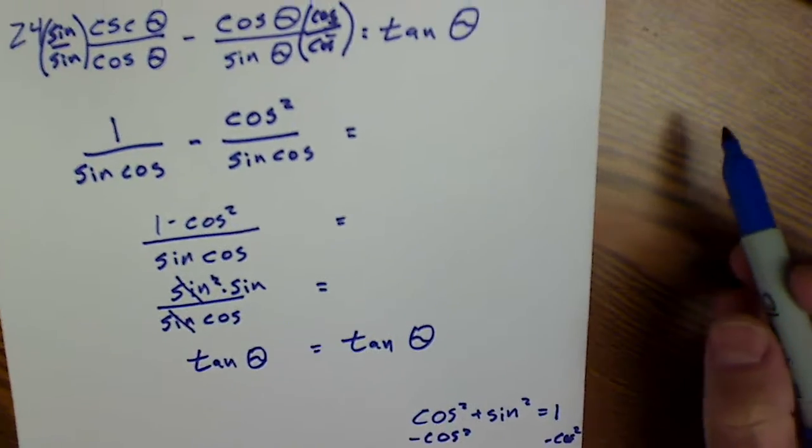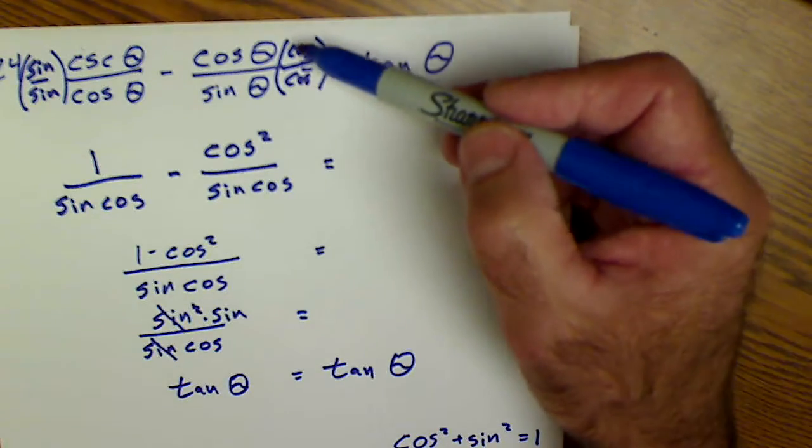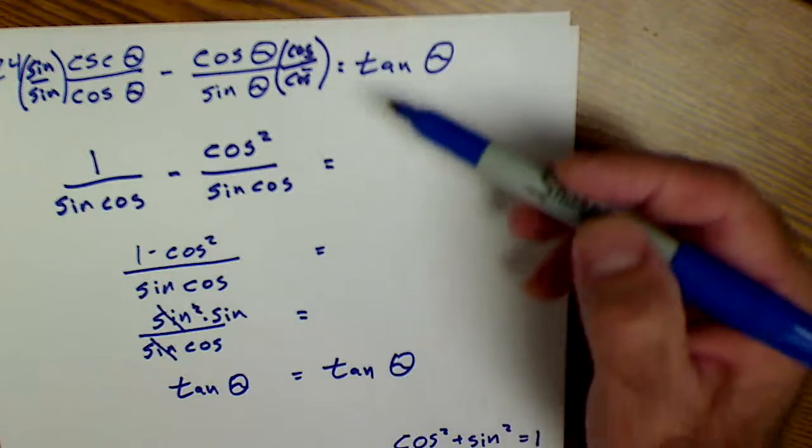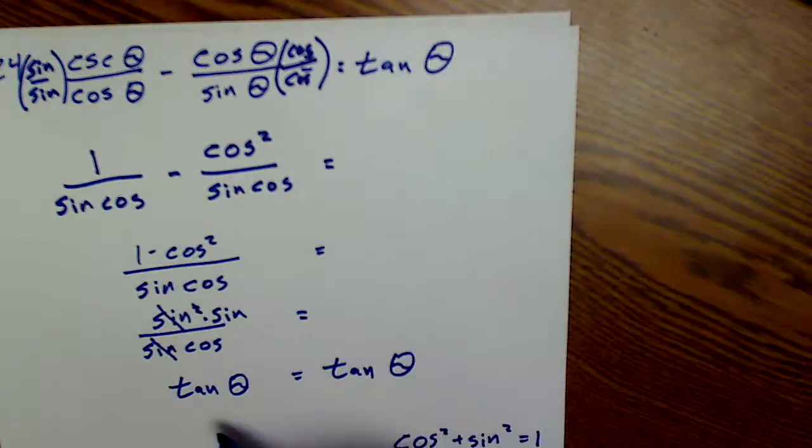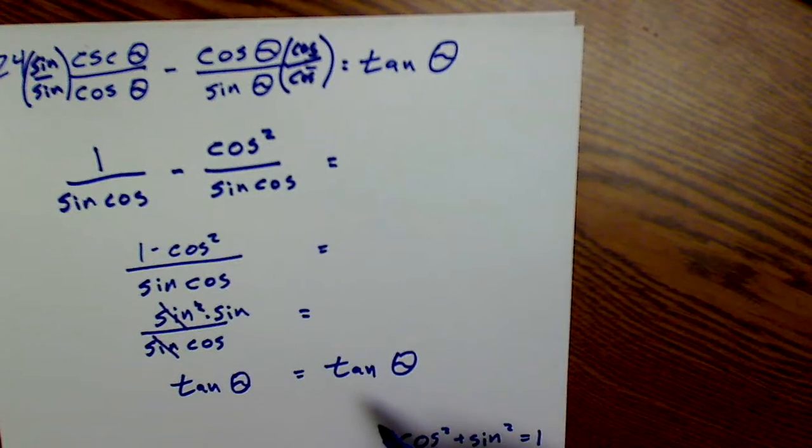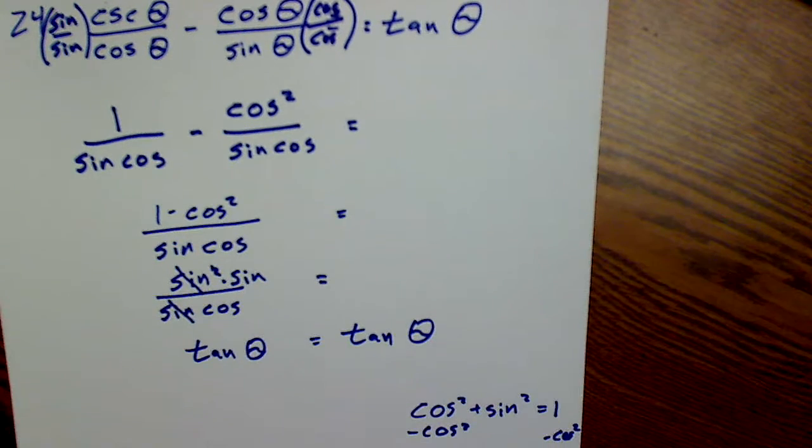Again, this is verifying identities. They're proofs. I only pick one side to work on. I work down. My equal signs line up. And then my last step is what I was asked to prove. Those are three example problems there.